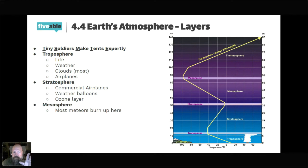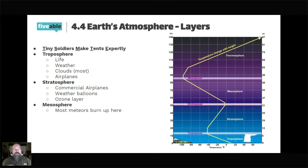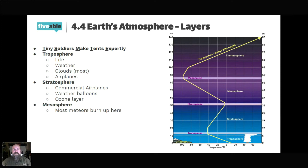When you see shooting stars — like the Leonid meteor shower that happened a month or two ago — most of those chunks are burning up in the mesosphere. There's just enough air particles to create friction to cause them to burn and get destroyed. If they're big enough, they can fall all the way through the mesosphere down to Earth itself.